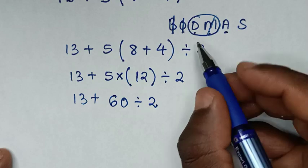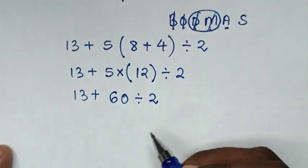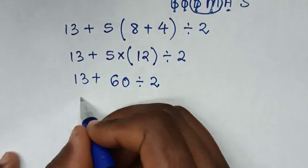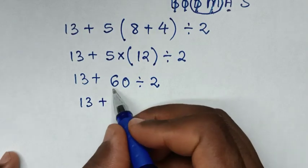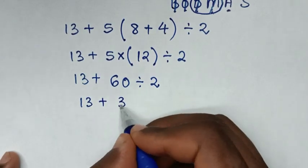Then in this group, we are left with division. So it will be 13 plus 60 divided by 2, which is 30.